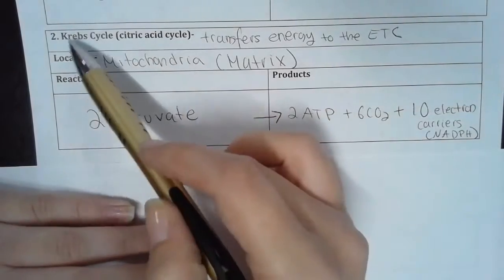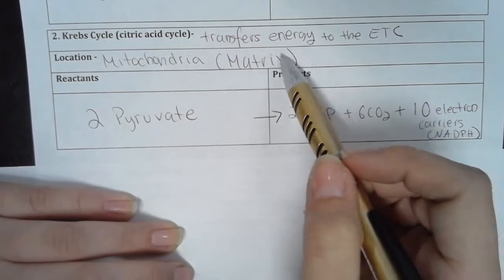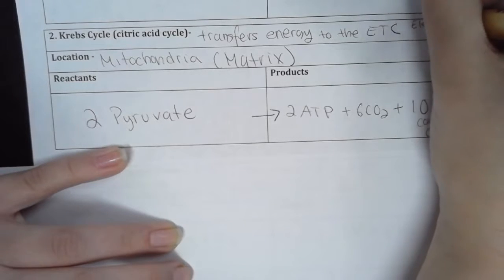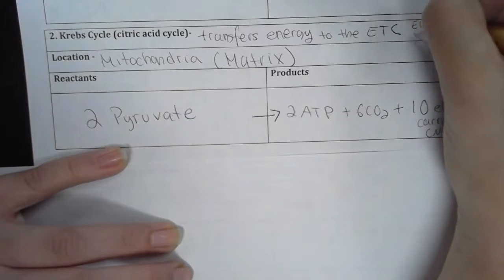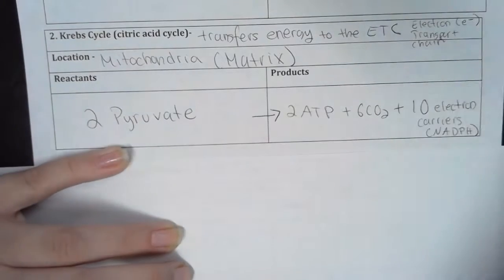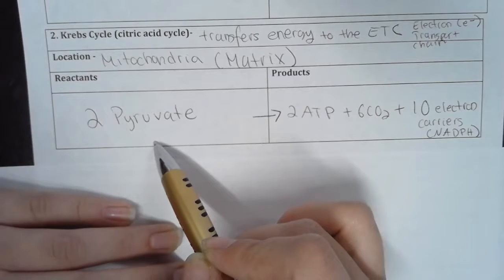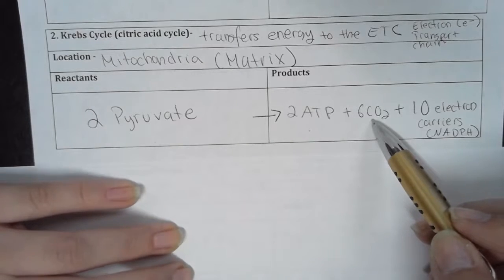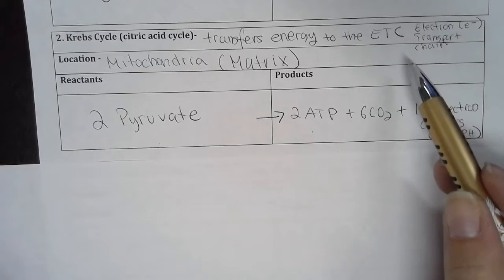This is called the Krebs cycle, or the citric acid cycle. The purpose of this is to transfer energy to the electron transport chain. So E-T-C is electron. I'm just going to write this in abbreviation. Electron transport chain. This happens in the mitochondria specifically, so the pyruvate travels into the mitochondria, and then it produces two ATP molecules, six carbon dioxide molecules, and then 10 electron carriers. That's really important for the electron transport chain.